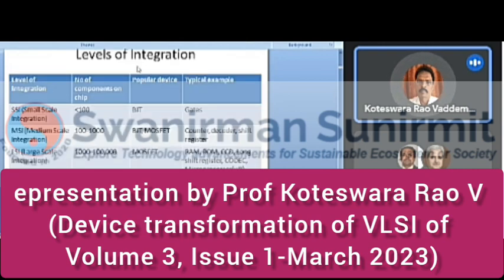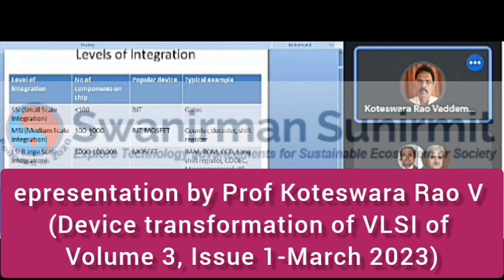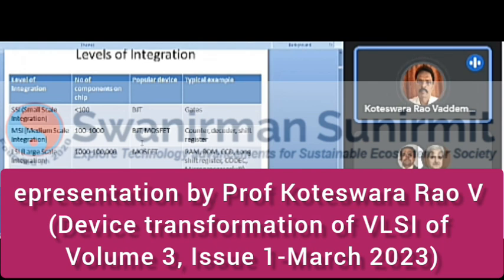What are the different levels of integration? Small Scale Integration (SSI) has less than 100 devices and is used for manufacturing basic components using bipolar junction transistors. Medium Scale Integration (MSI) ranges from 100 to 1000 transistors and is used for counters, decoders, and shift registers, where BJTs and MOSFETs can both be used.